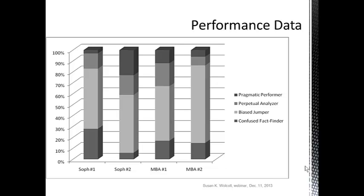The way to read these charts is to start with the darker color on the bottom, which indicates the proportion of students in each classroom operating as a confused fact-finder. You will notice that it is a fairly small percent in one of the sophomore classes, while it is fairly high, over 20%, in the other sophomore level class. It was close to 10% in each of the two MBA classes.